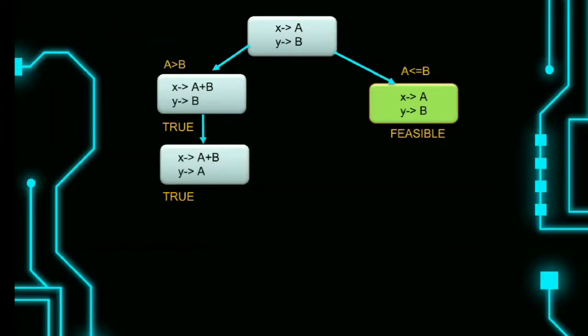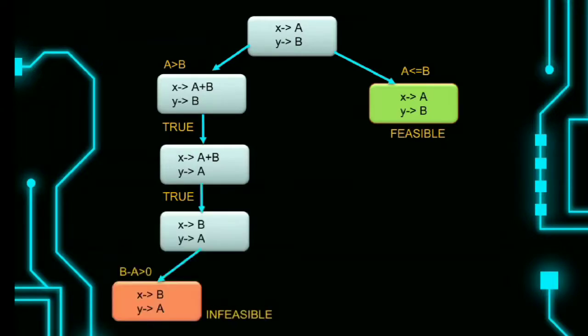Feasible is nothing but a non-negativity restriction. That is, the value, the input, is greater than 0 or equal to 0. But infeasible is, with any set of inputs, we cannot achieve.